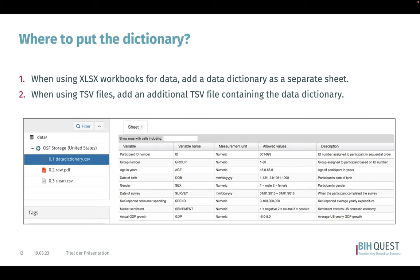Once your data dictionary is completed, you need to associate it somehow with your data. If you're using Excel workbooks, you can add a data dictionary as a separate sheet so it's always attached to your data. When you're using CSV or TSV files, add an additional TSV file that contains the dictionary. Here is a snapshot of what a data dictionary can look like.